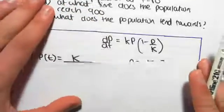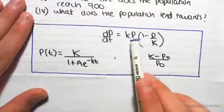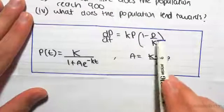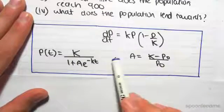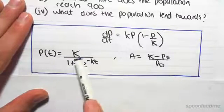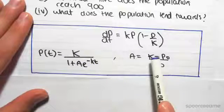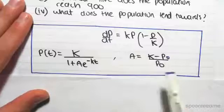Just to quote our differential equations again, dp/dt equals lowercase k times p times (1 minus p/K). The solution to this differential equation, which we derived in the previous video, was K/(1 + Ae^(-kt)), where A is (K - p0)/p0.